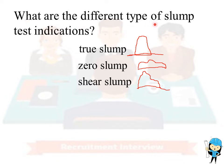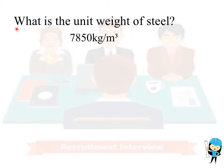The fifth question is: what are the different types of slump test indications? The types are true slump, zero slump, and shear slump. True slump has very high workability, zero slump has very low workability, and shear slump has medium workability. The sixth question is: what is the unit weight of steel? The unit weight of steel is 7850 kg per meter cube.